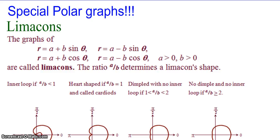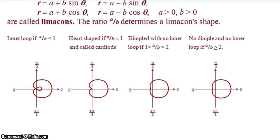So, the first one is limacons. I may not be pronouncing that correctly, I'm not sure. So, when are these going to occur? It's going to occur when we have r equals a plus some b sine theta, or a plus some b cosine theta, or r is a minus b sine theta, or a minus b cosine theta. For a is greater than 0 and b is greater than 0.